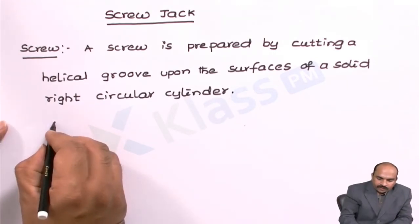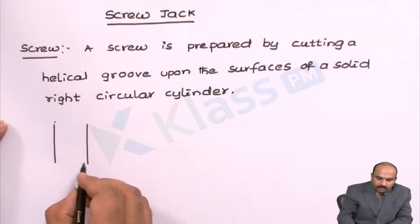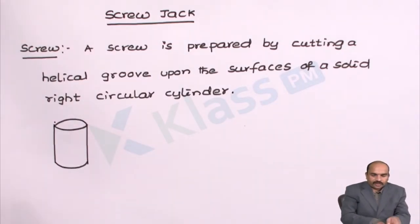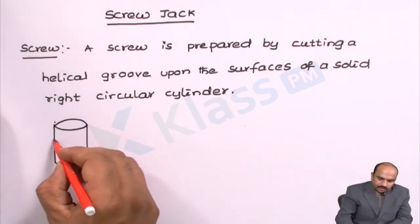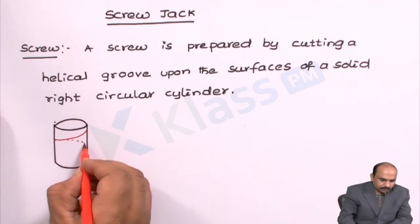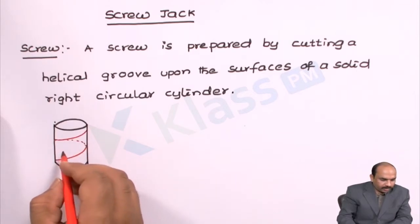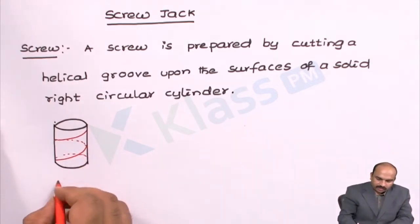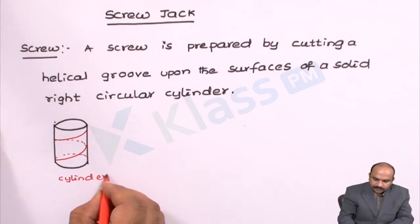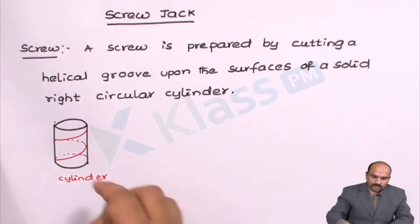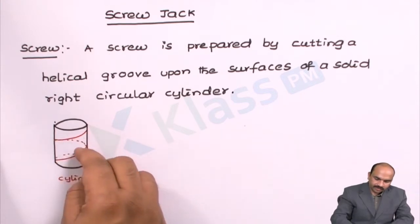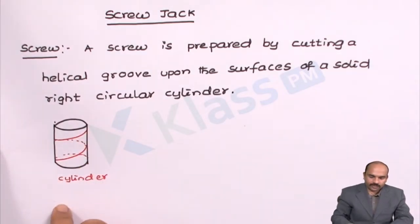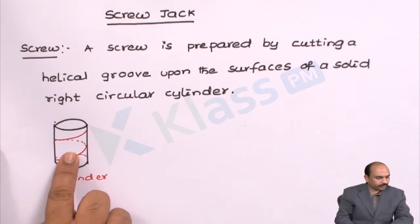Now we can see this with the help of a simple diagram. You can see this is the cylinder. Now there are grooves like this — the grooves are cut on the surface of the cylinder. On the surface of the cylinder, these are the helical grooves, you can see in the diagram. So this is known as a screw.